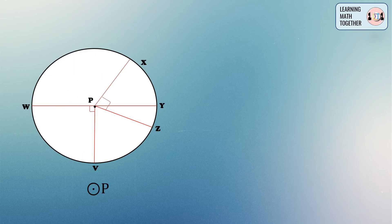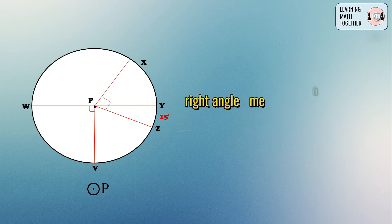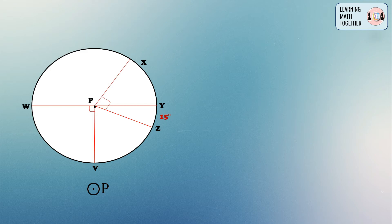Now let us discuss the last example — this is more complicated than the previous examples. In circle P, the given values are: the measurement of arc YZ is equal to 15 degrees, and the square symbols indicate right angles, which each measure 90 degrees. Take note of that because we will be using this idea to solve for the missing measurements.